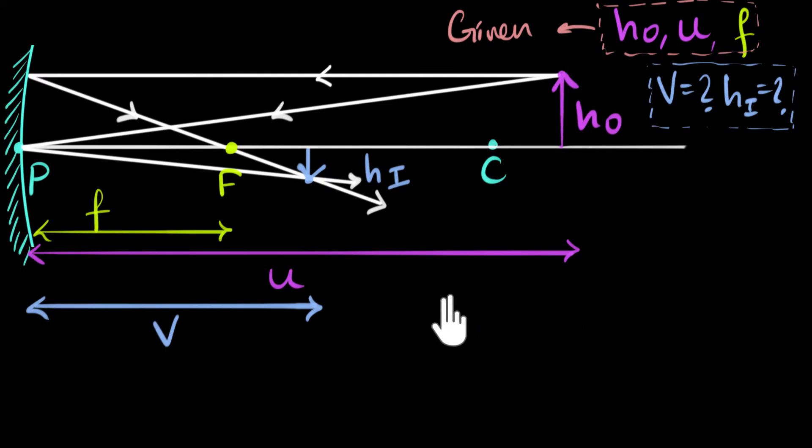So let's focus on what we want to calculate. We need to calculate V, that is this distance, and HI, that is this length over here. And notice what's given to us. Let's focus on these two things.